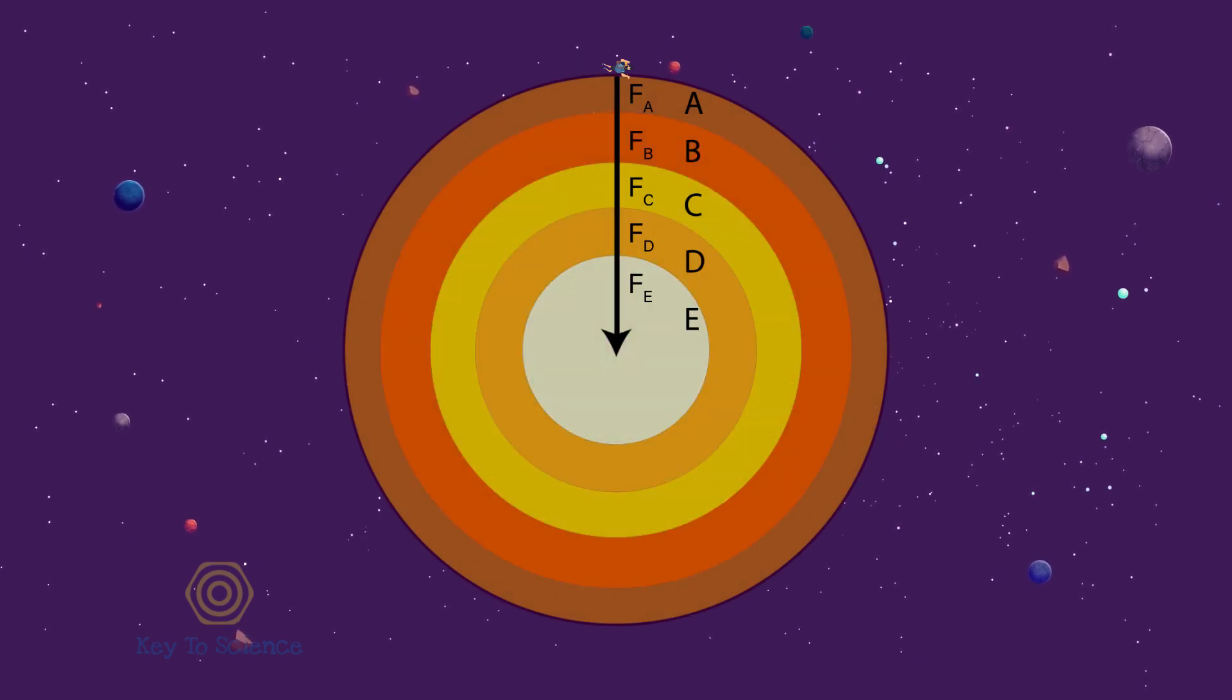Therefore, the Earth will be pulling us with a force, F-1, which is a sum of all these individual forces, and the direction of the force will be to the center of the Earth. As all the spheres will be pulling us to their centers, force F-1 is quite big.